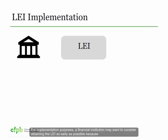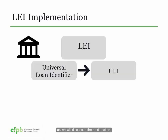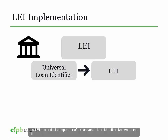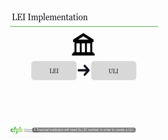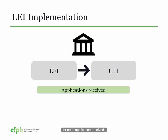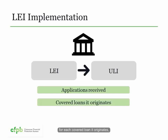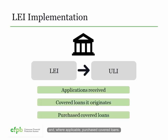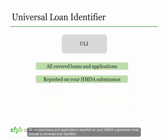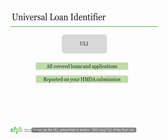The LEI is a 20-digit code issued by a utility endorsed by the LEI Regulatory Oversight Committee or endorsed or governed by the Global LEI Foundation. To obtain an LEI, visit the Global LEI Foundation's website at www.gleif.org. For implementation purposes, a financial institution may want to consider obtaining the LEI as early as possible, because the LEI is a critical component of the universal loan identifier, known as the ULI.